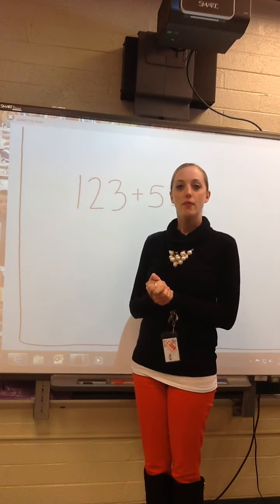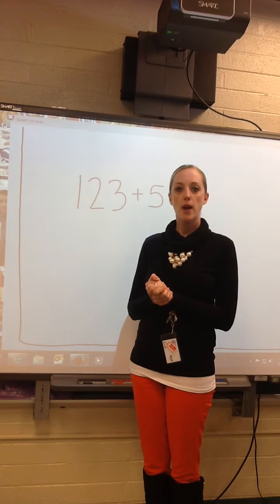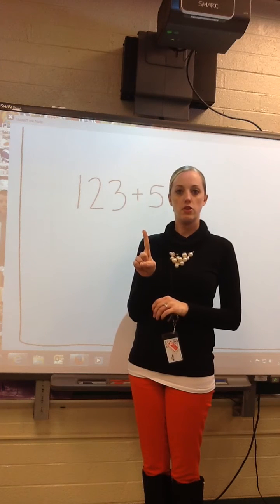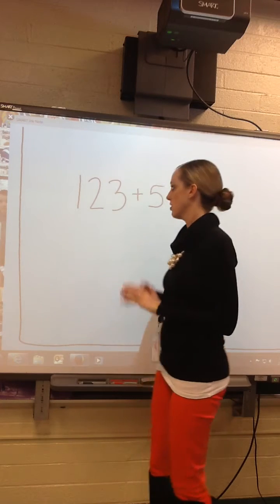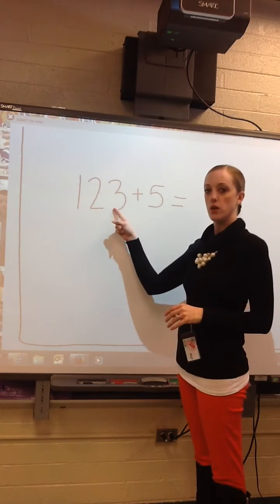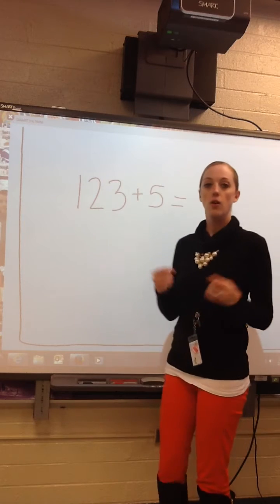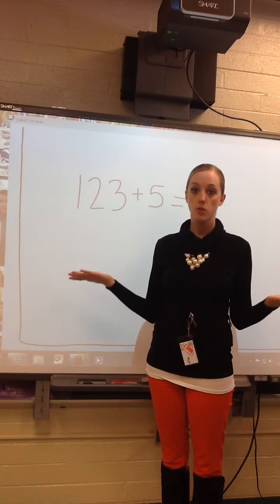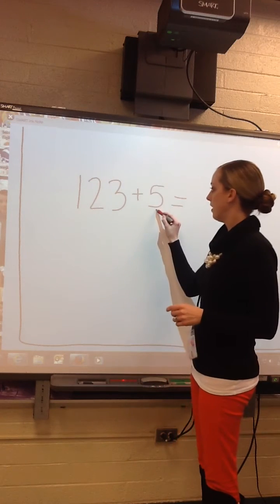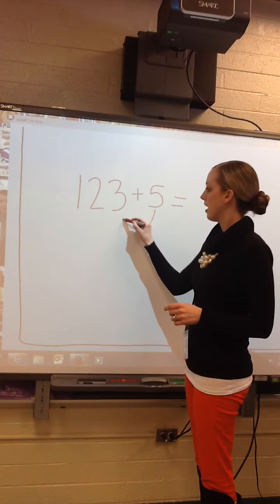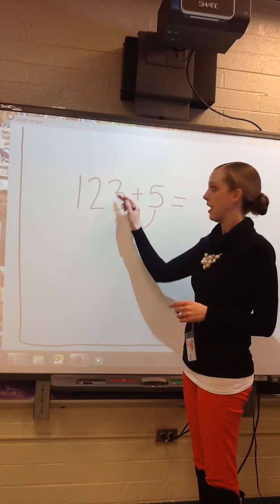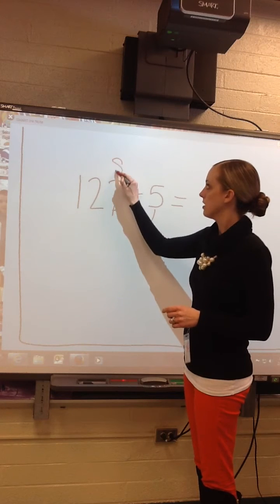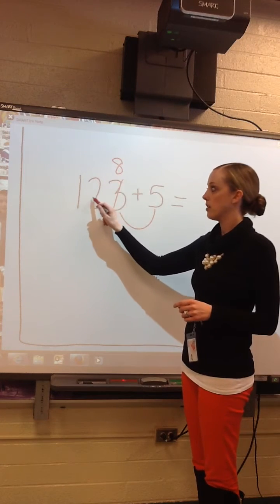Okay, I'm going to show you how to use mental math strategy 1, which is adding the ones mentally. So if I had the problem 123 plus 5, what am I adding? The ones. So I'm adding 5 and 3. 5 plus 3 is 8. So I have to cross that out, and your sum is 128.